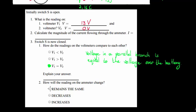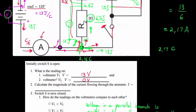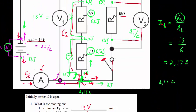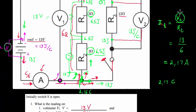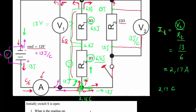How will the reading on the ammeter change when the switch is closed? Remember, the ammeter current equals voltage divided by total resistance. By closing the switch, I've added a resistor to the system. The key question is: does adding a parallel resistor increase or decrease total resistance?